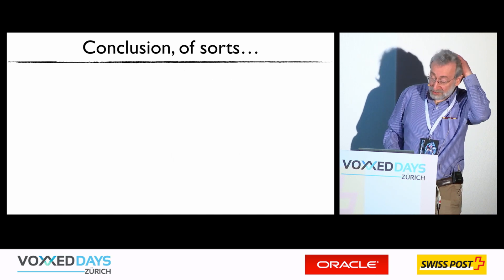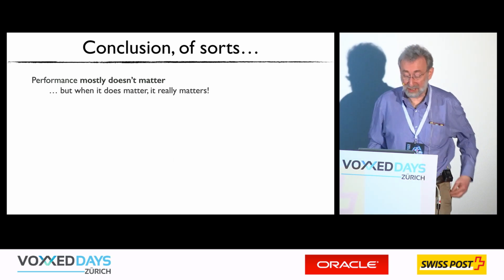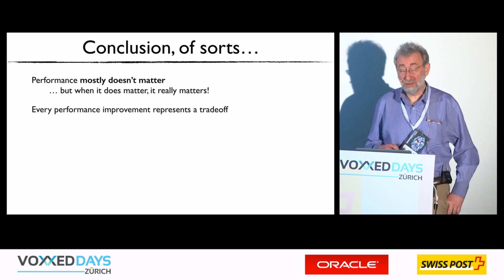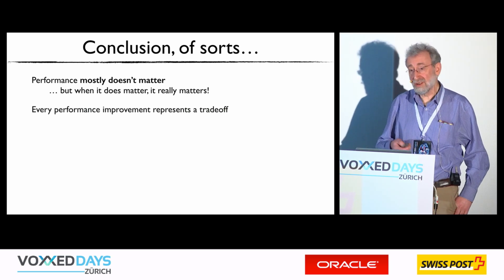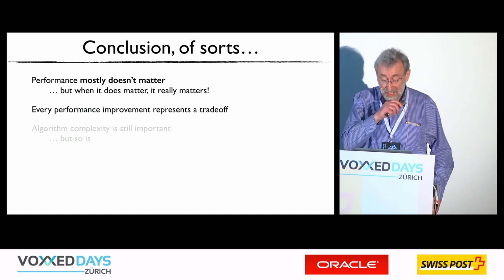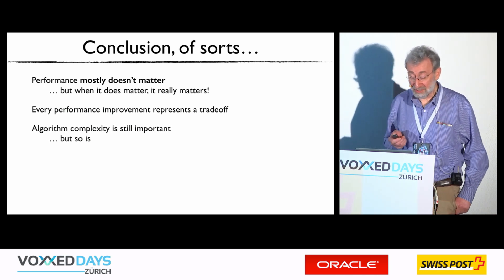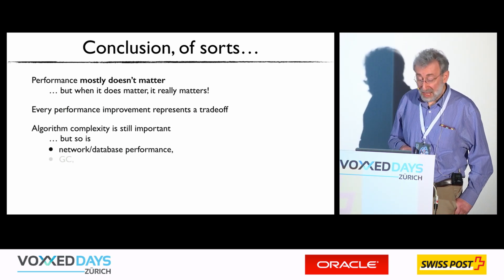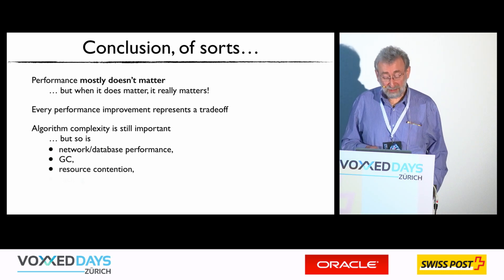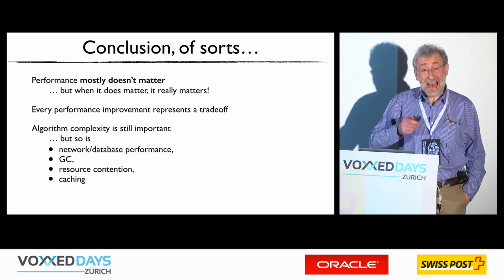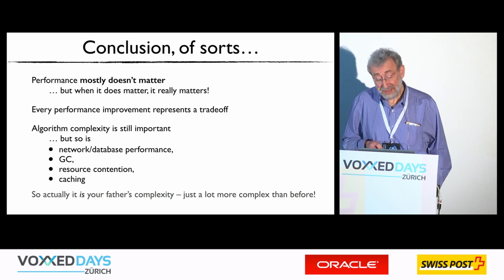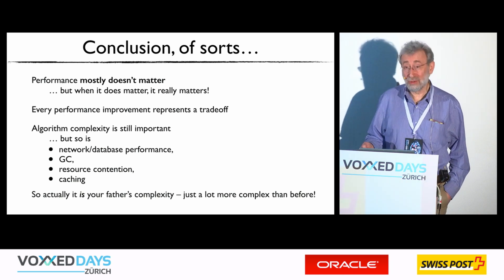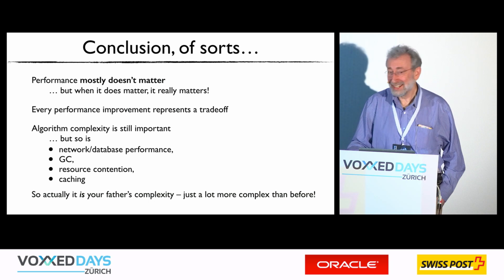So the conclusion: performance mostly doesn't matter, but when it does matter, it really does. Every performance improvement represents a trade-off. Algorithm complexity is still important, but so are all these other things — network and database performance, GC, resource contention, and caching. So in fact it really is your father's complexity — it's just got a lot more complex. Thank you.